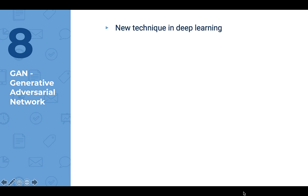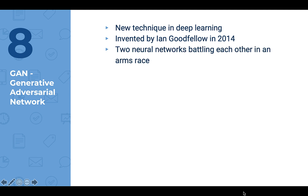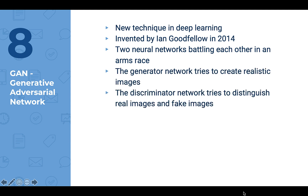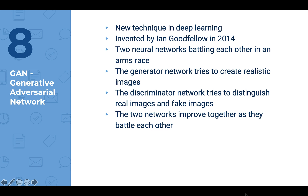So what exactly is GAN? It is a new technique in deep learning, invented by Ian Goodfellow in 2014. Basically, there are two neural networks battling each other in an arms race — that is why we call it adversarial. The generator network tries to create realistic images, then the discriminator network tries to distinguish real images from the fake ones. The two networks improve together as they battle each other.